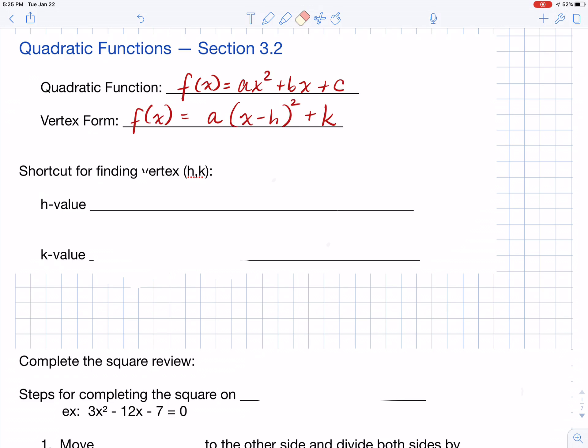The second format is the vertex form which is f of x equals a, the same a as what was in the other equation, times the quantity x minus h squared plus k. You'll also get very familiar with this particular equation. In fact, you saw it back in chapter two when we were messing with the squaring parent.